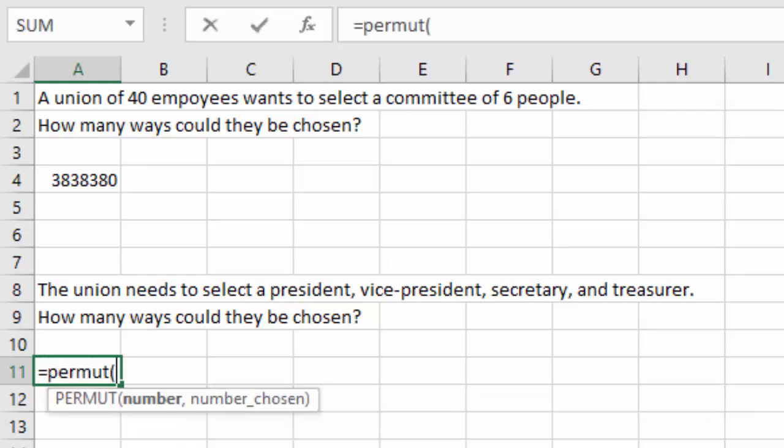Equals PERMUT. Open a parenthesis. We know there's 40 employees in this union, and they're selecting a president, vice president, secretary, and treasurer. That's four positions. And when I hit enter, I find there are 2,193,360 ways they can select their officers.